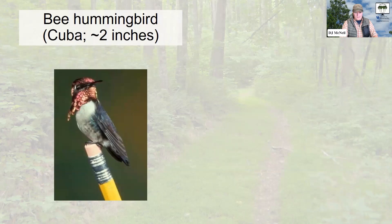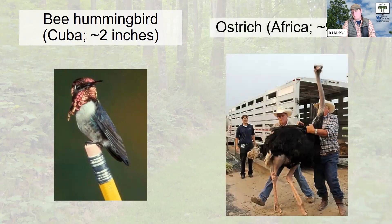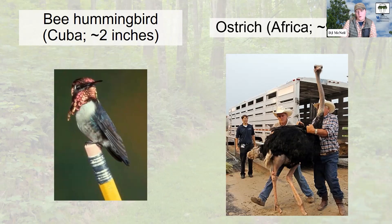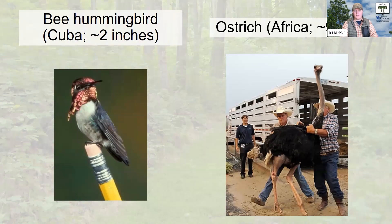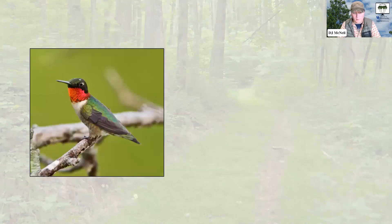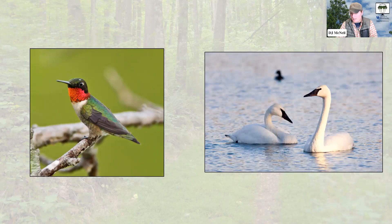Bird diversity is incredible today. On Earth we've got the smallest species of bird, the Cuban bee hummingbird, only about two inches long. And the largest bird, the ostrich in Africa, which grows to about nine feet and can be up to 300 pounds or even more. So we've got an enormous diversity of sizes. These are species we don't have in Kentucky, but in Kentucky we also have a pretty enormous breadth of species — our smallest bird, the ruby-throated hummingbird, and the trumpeter swan, which can be upwards of 40 pounds. Both species are capable of flight. Incredible diversity.